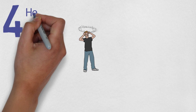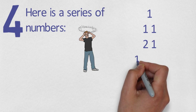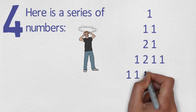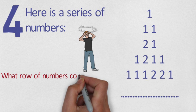These are getting tricky now. Here is a series of numbers. What row of numbers comes next?